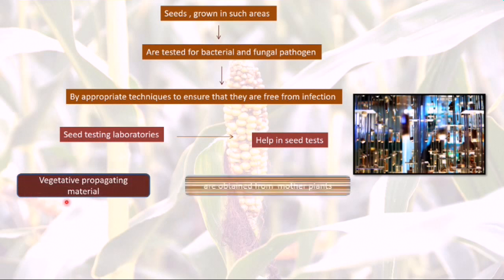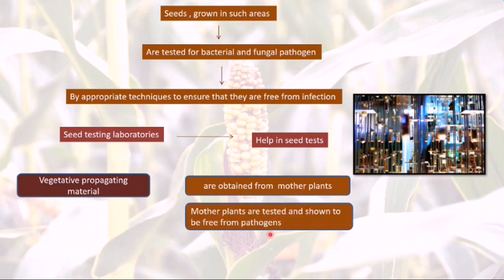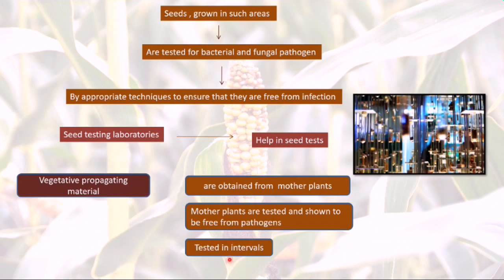When using vegetative propagating material, these are obtained from mother plants. For example, potato is a tuber obtained from the mother potato plant. Mother plants are tested and shown to be free from pathogen. Tests are carried out at intervals to ensure that disease has not appeared in between. This way, tests are carried out for all kinds of propagating material to ensure it is free from pathogen.